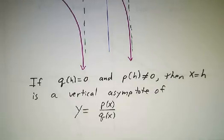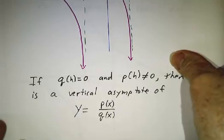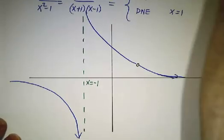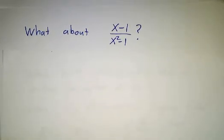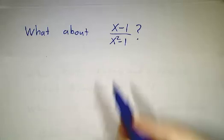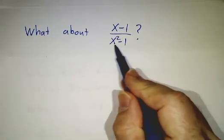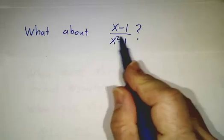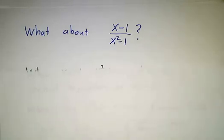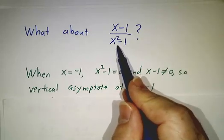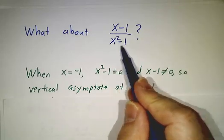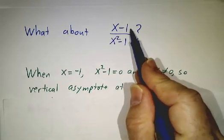Now, the statement 'and the numerator doesn't' is important. Let's take a look at the function (x - 1) over (x² - 1). Where are its vertical asymptotes? You might think that they're at plus or minus one because that's where the denominator goes to zero. And in fact, when x is negative one, you do get a vertical asymptote because the denominator is zero and the numerator isn't.